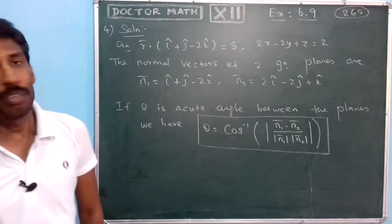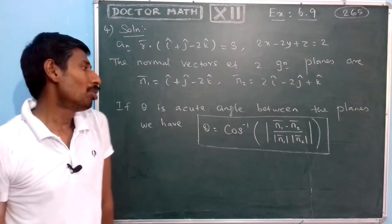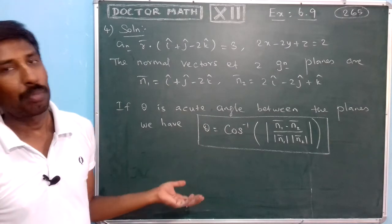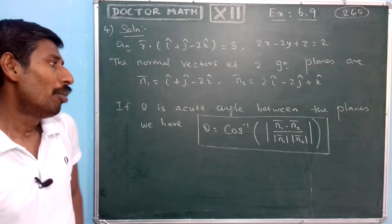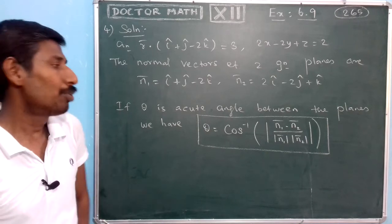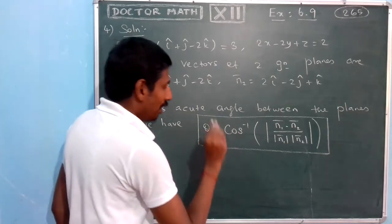Now, when we have the angle, we need to find the angle between the planes. The formula is equal to cos inverse of mod N1 vector dot N2 vector divided by mod N1 vector times mod N2 vector.